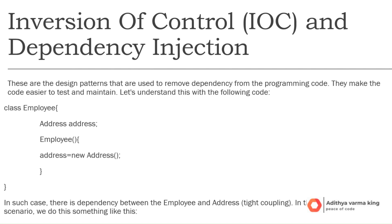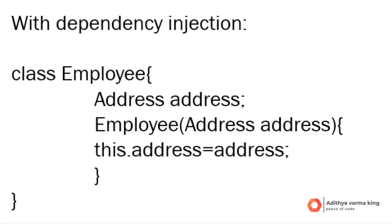In the typical case, there is a dependency between the Employee and Address classes — this is tight coupling. In the Inversion of Control scenario, we do something like this, where IoC makes the code loosely coupled. In such a case, there is no need to modify the code if our logic is moved to a new environment. The Address dependency is injected into the Employee class through its constructor.